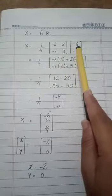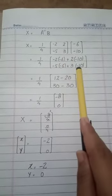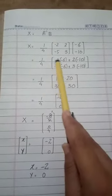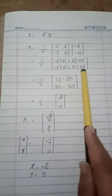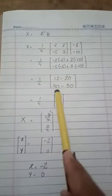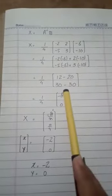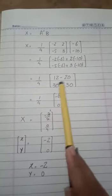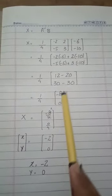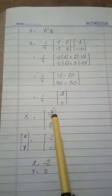You can see minus times minus is plus: 2 times 6 is 12, plus minus times minus is 2 times 10 which is 20. Then 5 times 6 is 30, plus minus times minus 3 times 10 is 30. So 12 minus 20 is minus 8, and 30 minus 30 is 0. Now divide both values by 4: minus 8 by 4 and 0 by 4.